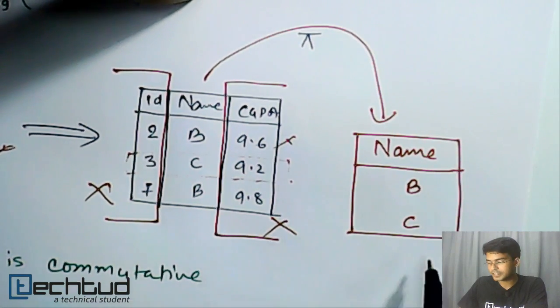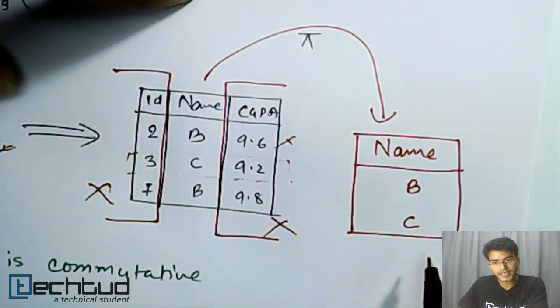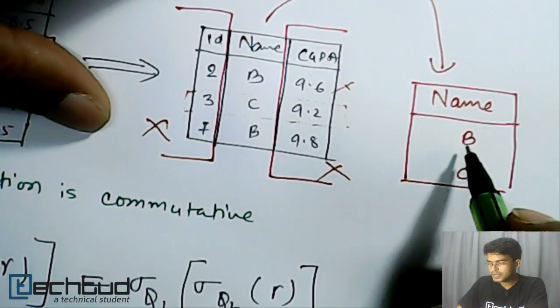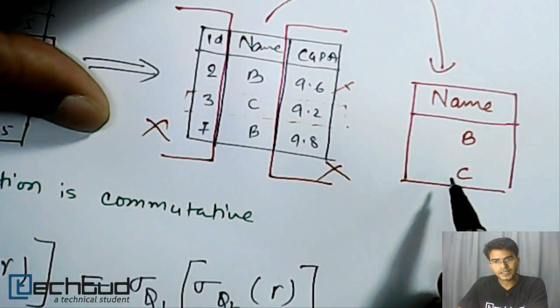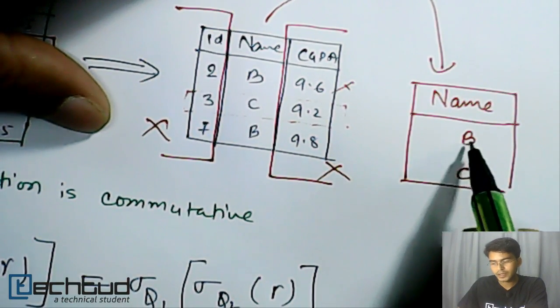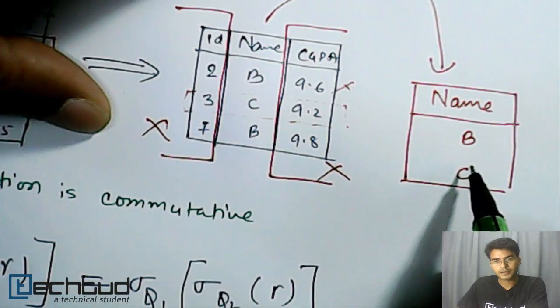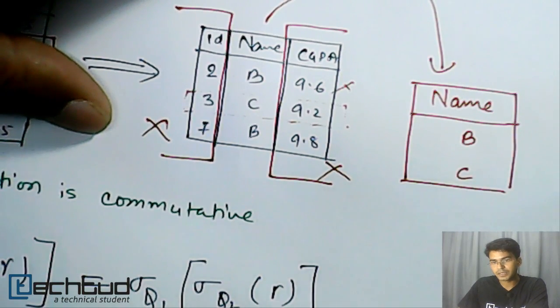Because what a relational algebraic expression returns is a set. So this is basically a set, and in a set we don't repeat elements. So this B and C will be there; we will not write BCB. We will not repeat elements.